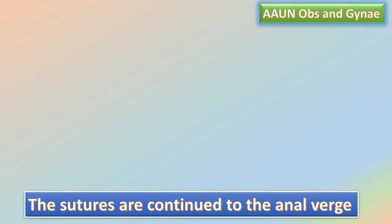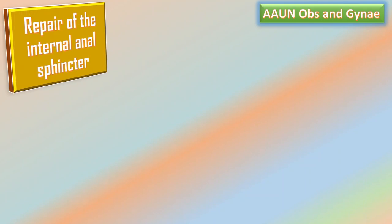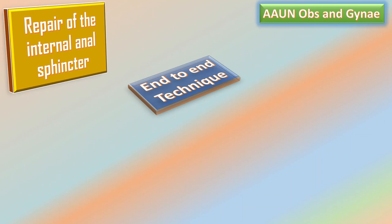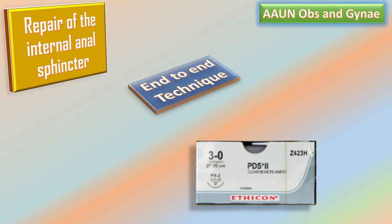For repair of the internal anal sphincter, I will identify it as a glistening white fibrous sphincter structure between the rectal mucosa and external anal sphincter. The structure may be retracted laterally, and placement of Allis clamps on the muscle ends facilitates repair. I will close it separately with interrupted or mattress sutures using an end-to-end technique, with either 3-0 PDS or modern braided sutures such as 2-0 Vicryl sutures.